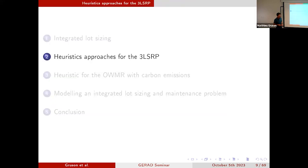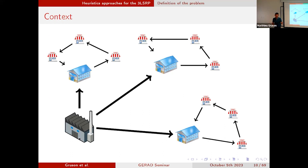Now I'm going to go into the different projects. The first one is from my PhD thesis at HEC Montreal on the three-level lot sizing and replenishment problem. For this first project, I consider the supply chain point of view — the one I just illustrated earlier. So what is the supply chain we consider and what is the flow of goods?